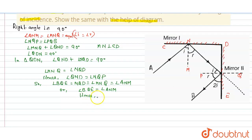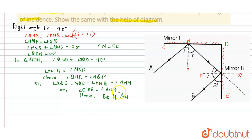BQ is parallel to AN. This means the incident ray and reflected ray will always be parallel, for any value of the angle of incidence. I hope you understand. Thank you.